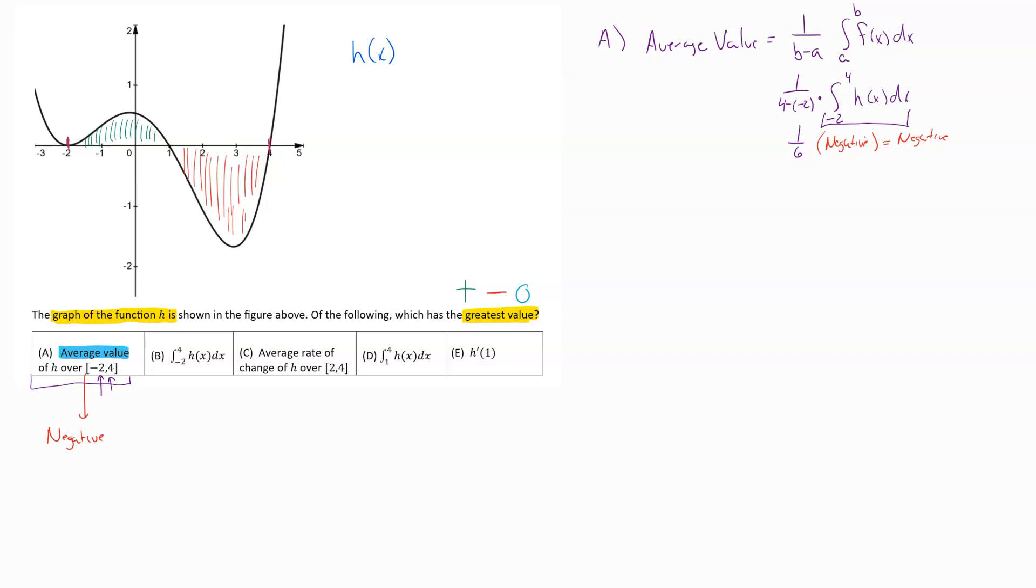Then we look at option B. Option B wants us to find the integral between negative two and four of h of x. Well, we kind of just talked about that piece. That piece we know right there. That we know is negative. And if we had to compare these two, the one sixth of a negative is going to be larger because it'll be a smaller negative. But really, these both are both negative. So odds are these aren't going to be what we're looking at.